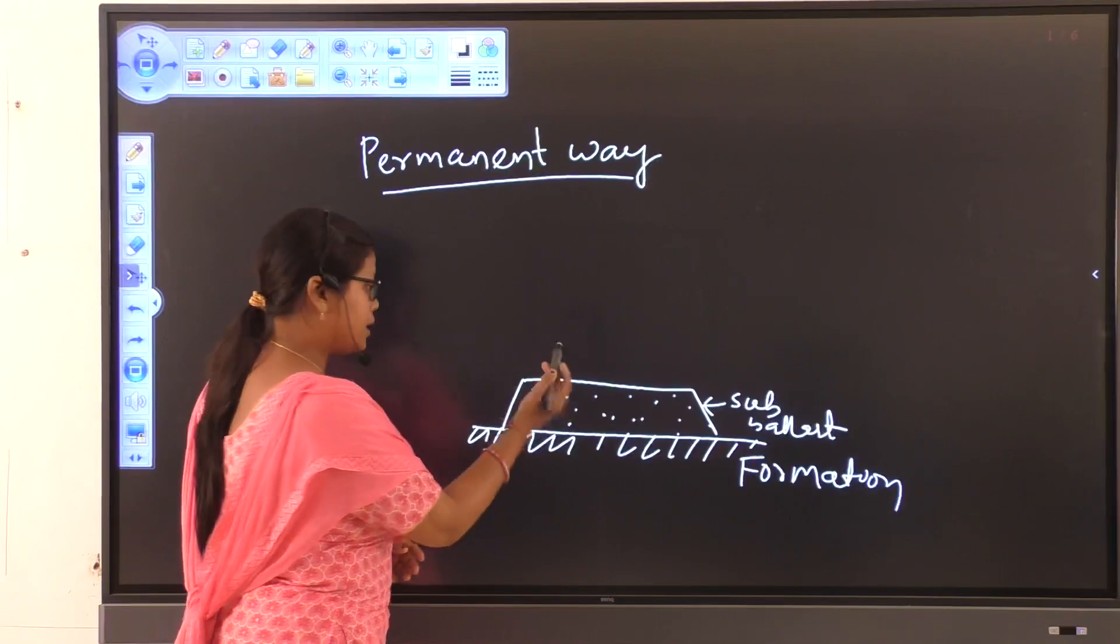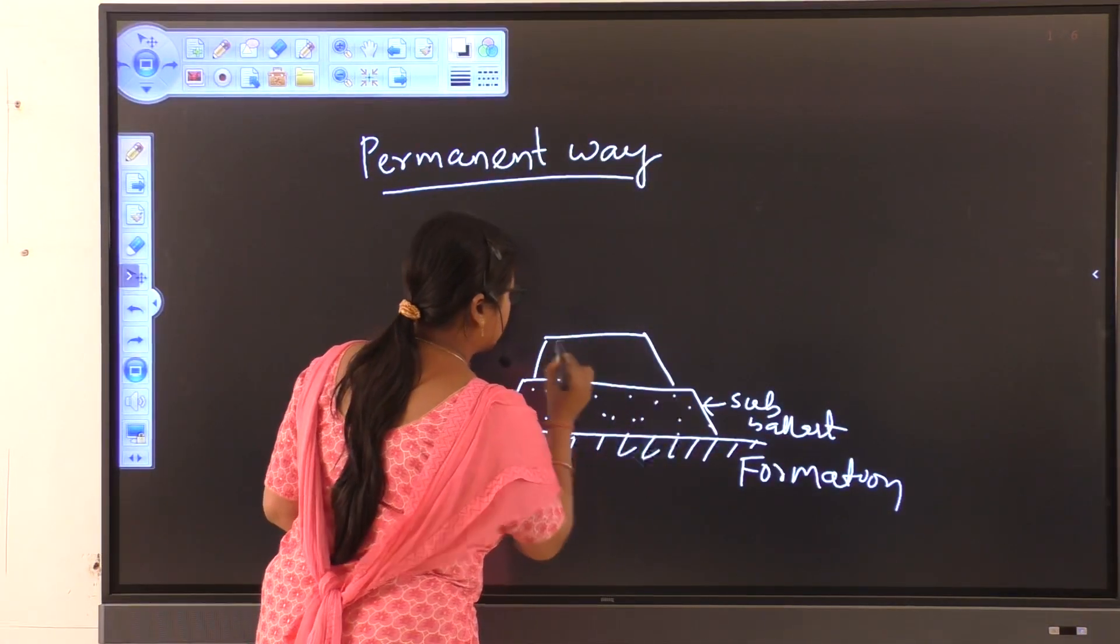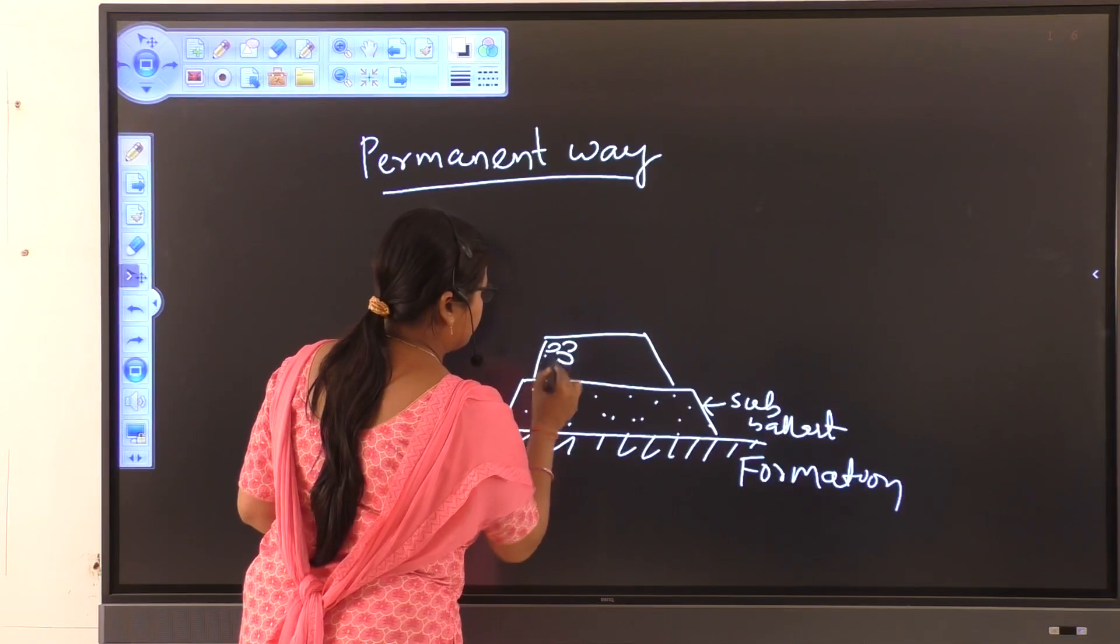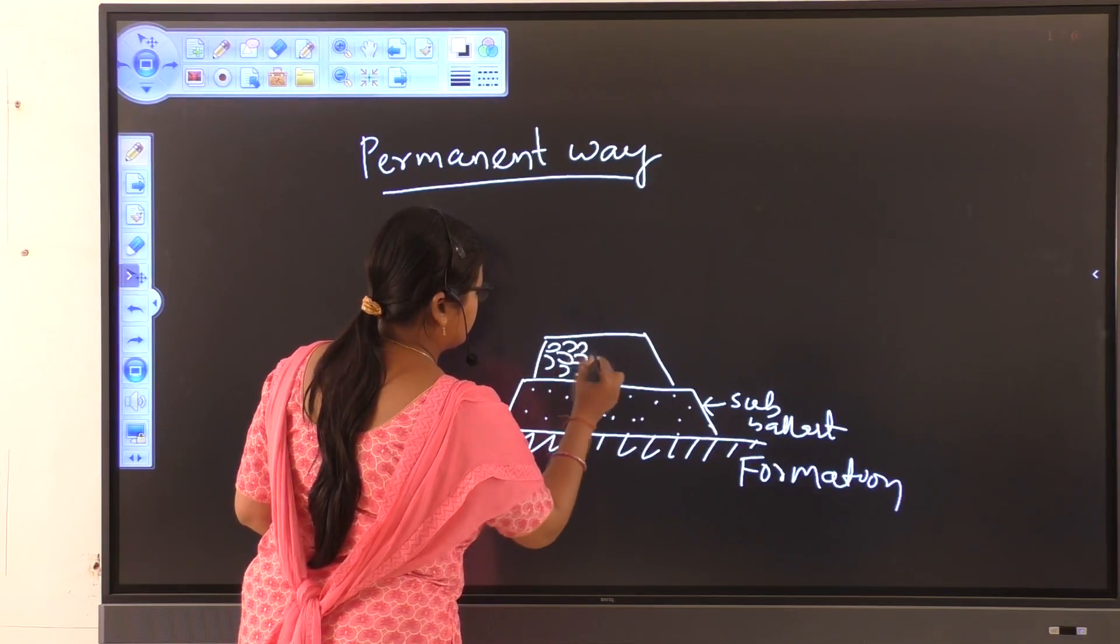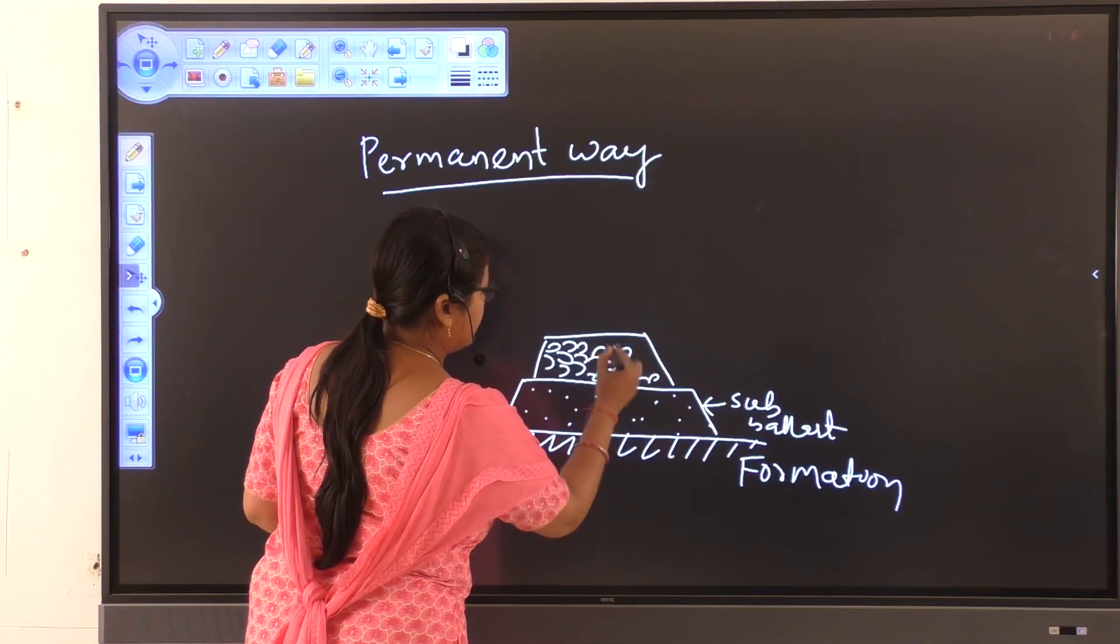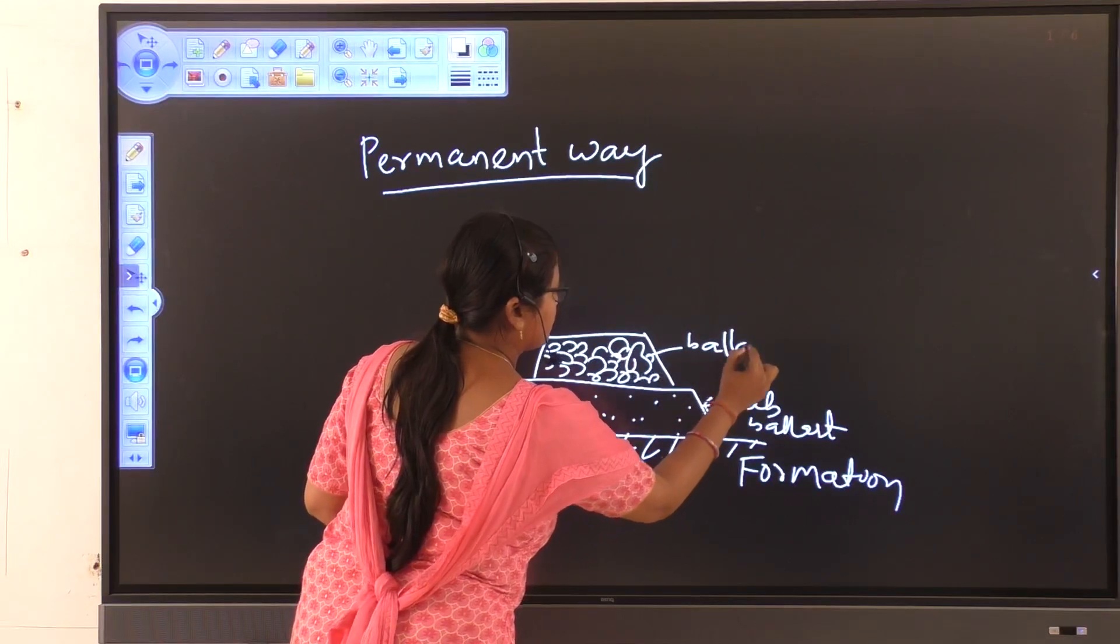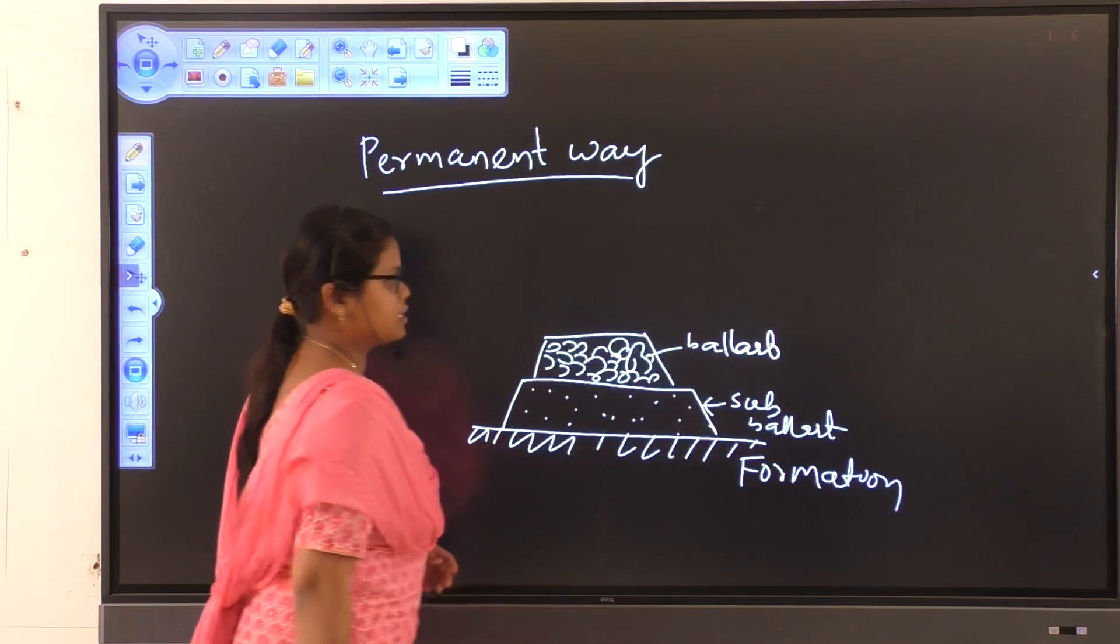And over the sub-ballast, there is a layer of boulder of size 40 to 80 mm are placed. And this layer is known as ballast.